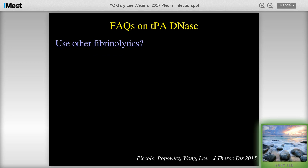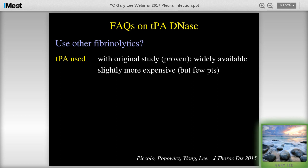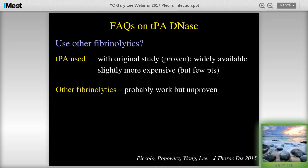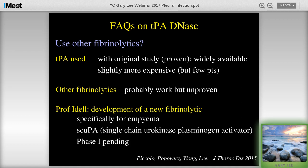Regarding other fibrolytics: TPA was used in the original New England Journal study because it's widely available. Compared to the amounts used by cardiology and neurology colleagues, it is only a drop in the ocean for overall hospital expenses. Other fibrolytics probably work but haven't been proven. Dr. Eidel is developing a new fibrolytic specifically for pleural purposes called Single-Chain Urokinase Plasminogen Activator, which has shown promise in animal studies and has an NIH grant to proceed to a Phase I study.